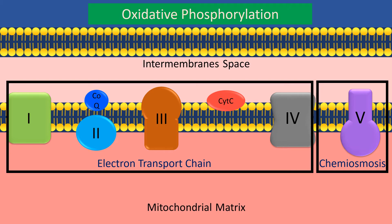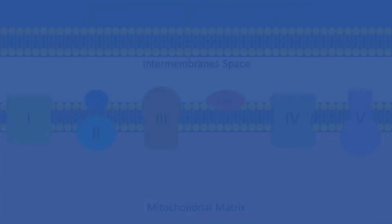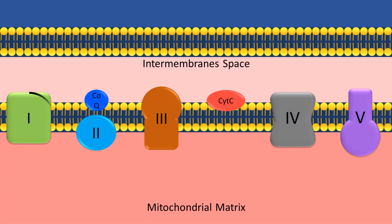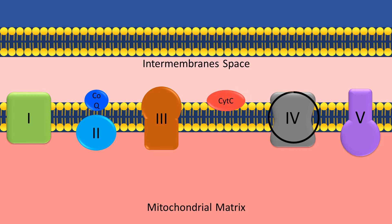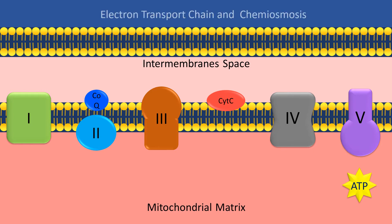In addition to the 5 complexes, coenzyme Q and cytochrome C are also present. They do not act as complexes, but they are needed and are embedded in this area of the electron transport chain. During the various stages of the electron transport chain, the electrons get shuffled from one complex to the other to generate a proton gradient, which is utilized by ATP synthase to produce massive amounts of ATP. Now let's see how these processes work in a step-by-step fashion.